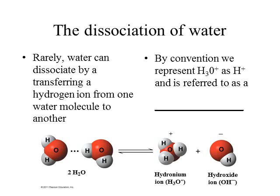When water dissociates, these two water molecules separate: the one that receives the hydrogen ion becomes a hydronium ion, which is H3O+, and the one that lost the hydrogen ion becomes a hydroxide ion, which is OH-. Again, this is a very rare event.